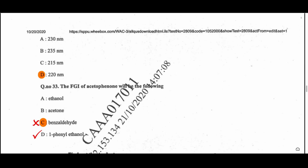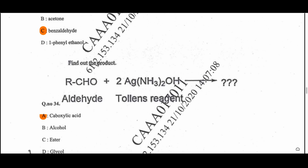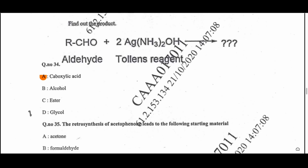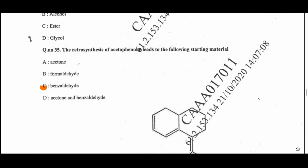Question 33: The FGI of acetophenone is option D — 1-phenylethanol is the FGI of acetophenone. Question 34: This reaction is between an aldehyde and Tollens' reagent, giving the product where the aldehyde is converted into a carboxylic acid.